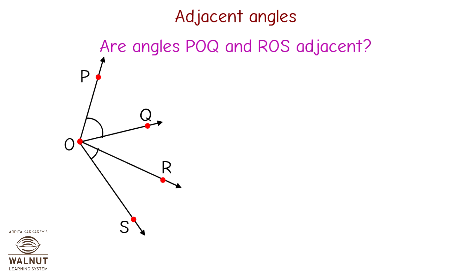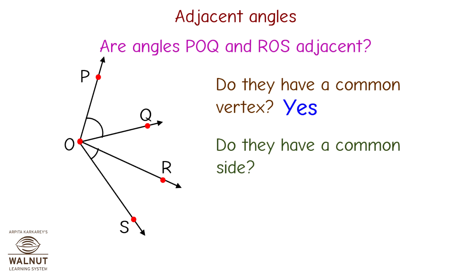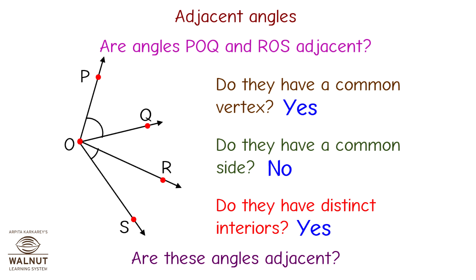Are angles POQ and ROS adjacent? Do they have a common vertex? Yes. Do they have a common side? No. Do they have distinct interiors? Yes. Are these angles adjacent? No.